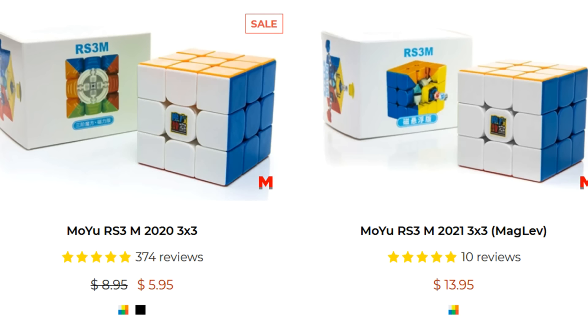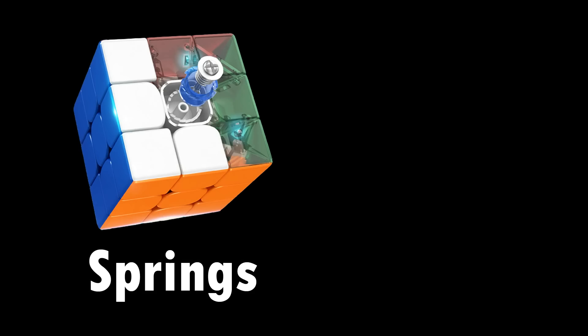Cube names are stupid and these two cubes are the same besides the maglev core. And what is maglev? Well, instead of springs holding the cube together, there are repelling magnets.